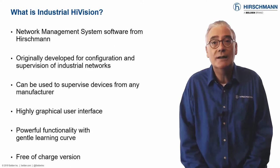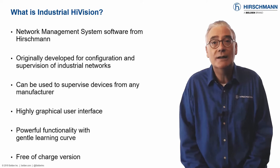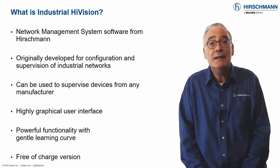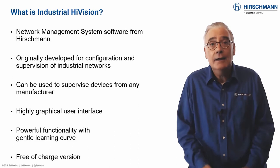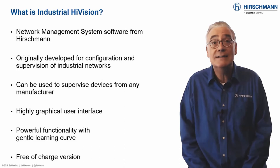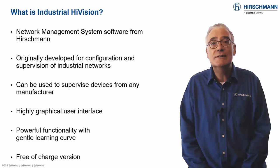Industrial HiVision was originally developed to configure and supervise industrial networks built using Hirschman equipment. Over the years, it has been developed to support equipment from any manufacturer. Today, it provides functionality which is usually only found on expensive office network applications.